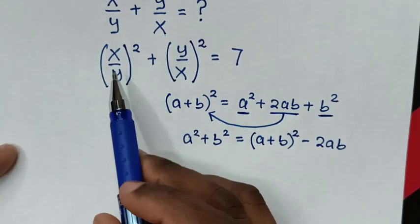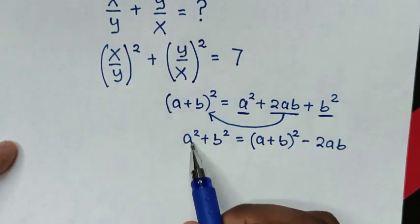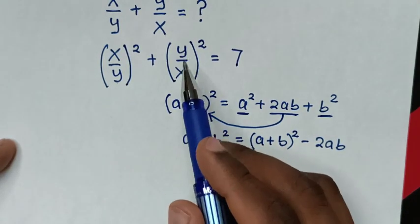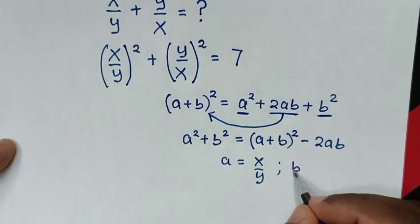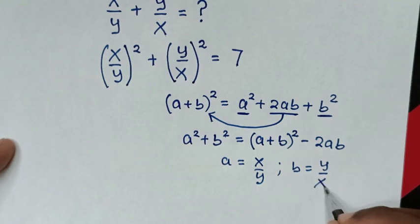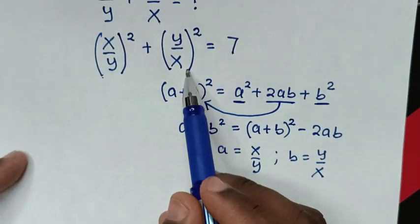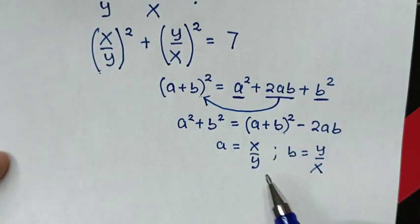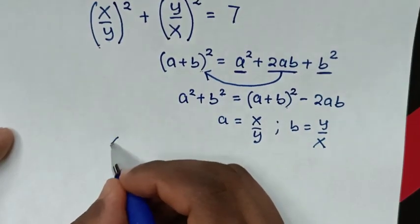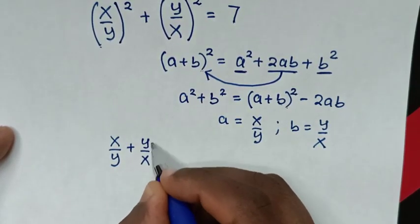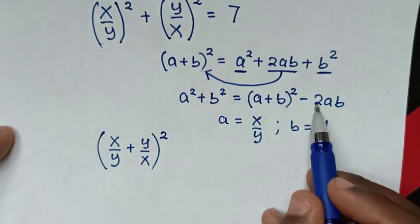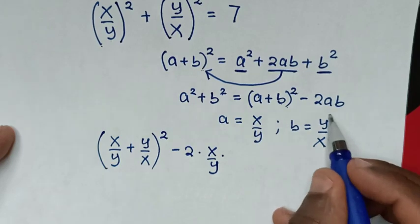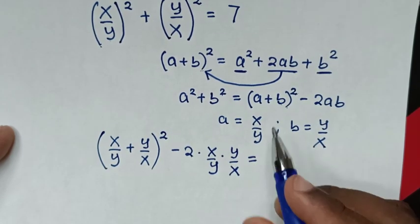When you compare (x/y)² with a², then a is equal to x/y. And also when you compare (y/x)² with b², then b is equal to y/x. So it will be (a + b)² which is (x/y + y/x)², then minus 2ab, which is minus 2 times x/y times y/x, equal to 7.